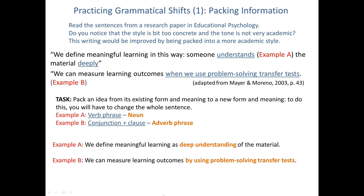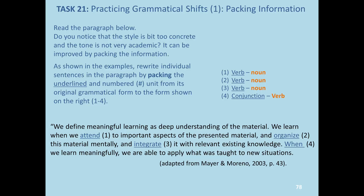We can measure learning outcomes by using problem solving transfer tests. In this clause, 'by using problem solving transfer tests' is a packing of 'when we use problem solving transfer tests.' In the next task, you will be doing operations of packing. Read the paragraph below and rewrite individual sentences by packing the underlined and numbered unit from its original grammatical form to the form shown on the right — tasks 1, 2, and 3 shift from a verb to a noun, and 4 from a conjunction to a verb. Please try this out and pause the video here.